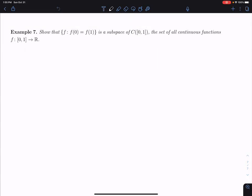So we want to show that some sets, the set of F where F(0) equals F(1) is a subspace of C[0,1]. And I tell you here that C[0,1] is by definition the set of all continuous functions F from [0,1] to R. So there's a bit to unpack here.